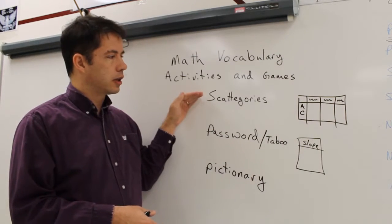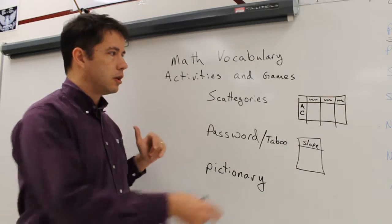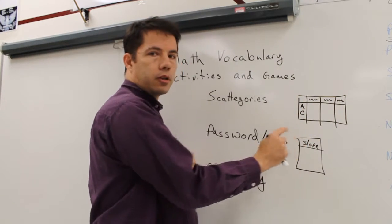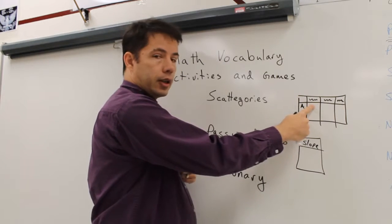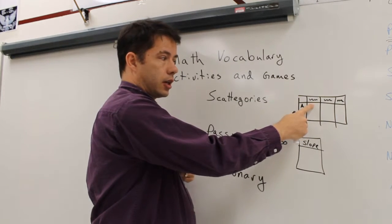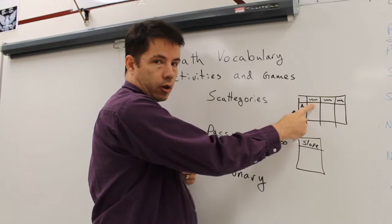So the first one that we're going to look at is categories, which is pretty common. Basically you write words across the top and then in the authentic game, you write random letters and then you try to fill in, if this is a sports thing, what sports word starts with the letter A.